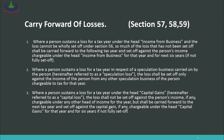Carry Forward of Losses: Set-off means you are setting a loss against income in the same year it occurred. However, this is not always possible. For example, if you had a business loss of 5 lakh but no capital gain and no income from other sources that year, there is no income to set it off against. In that case, you can carry forward that loss to the next year. If in the next year you have business income of 20 lakh, the previous 10 lakh loss is adjusted and only 10 lakh remains as taxable income.